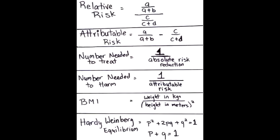What is the number needed to treat? The number needed to treat is 1 divided by absolute risk reduction.